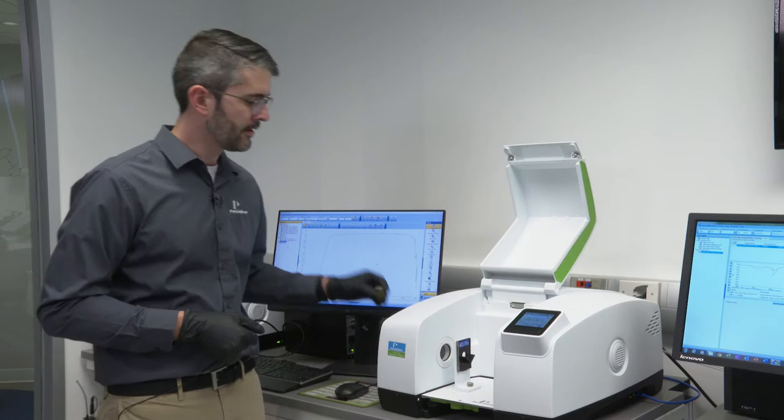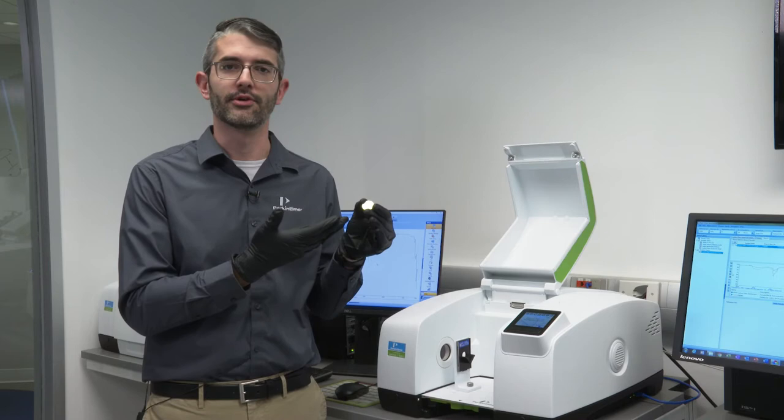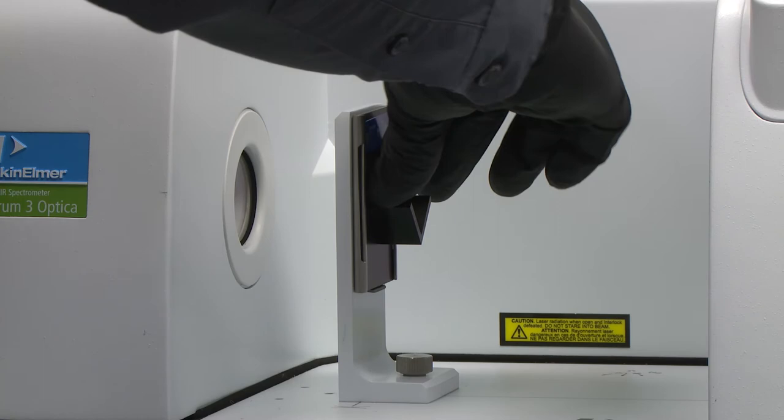You might ask why. Let's take as an example a disk of zinc selenide. Zinc selenide has some modest refractive index, somewhere around 2.4 in the mid-infrared spectral region.